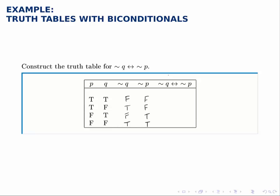And then for the biconditional, not Q if and only if not P: for the first row that will be true because they agree, they're the same. For the second and third rows it'll be false because they disagree. And then for the last row it'll be true because again they agree.